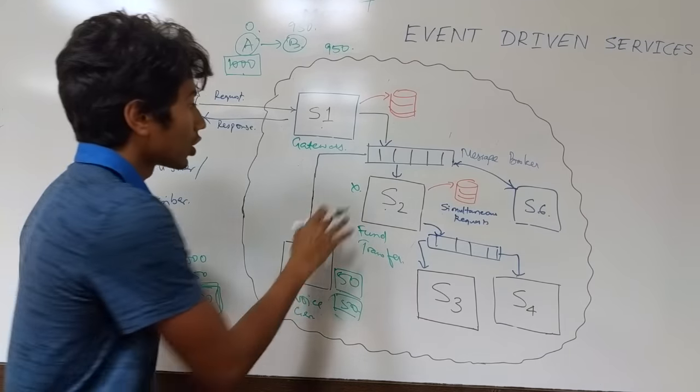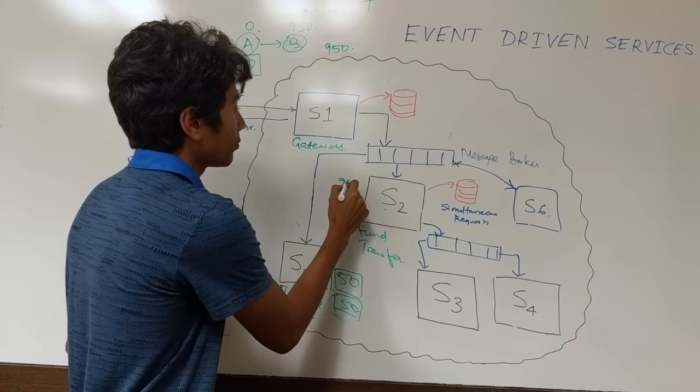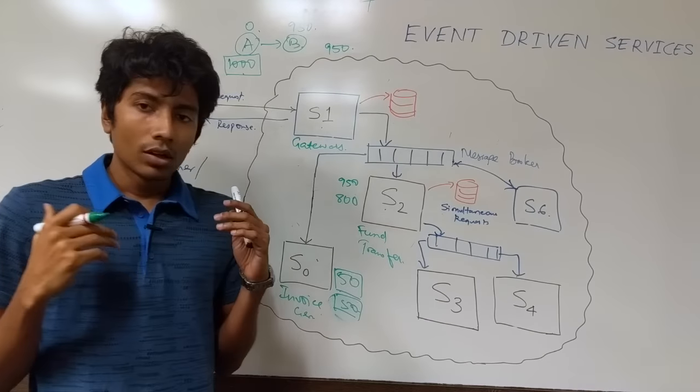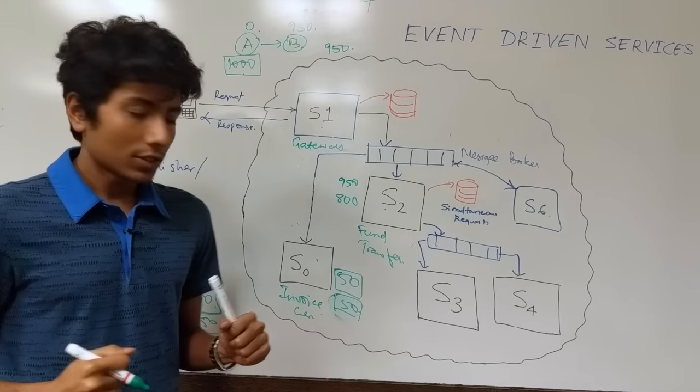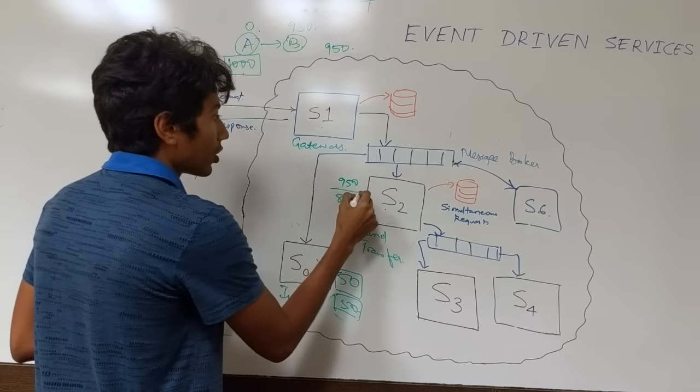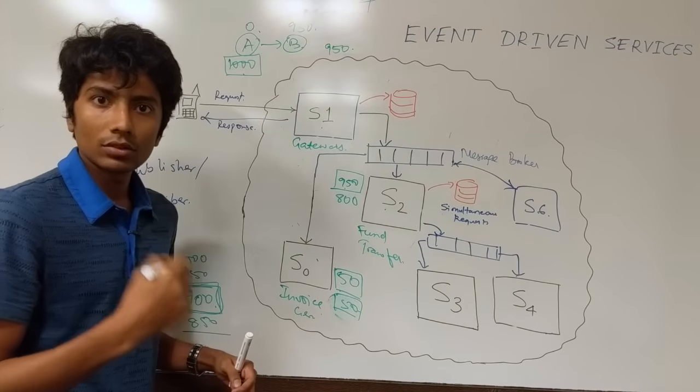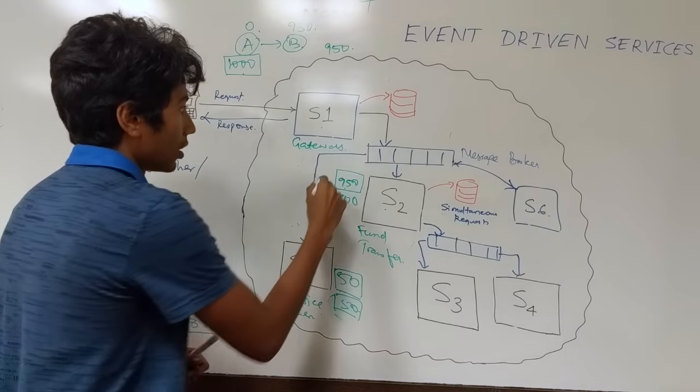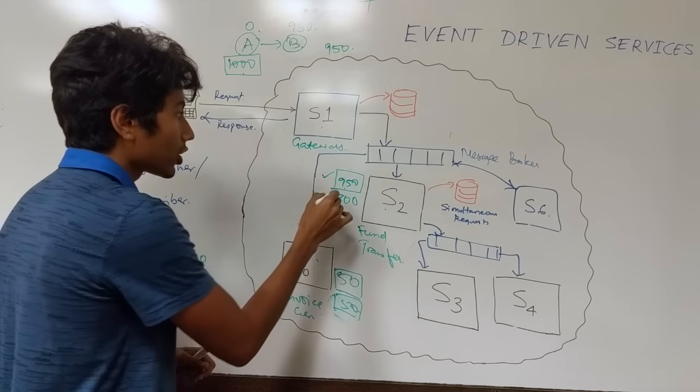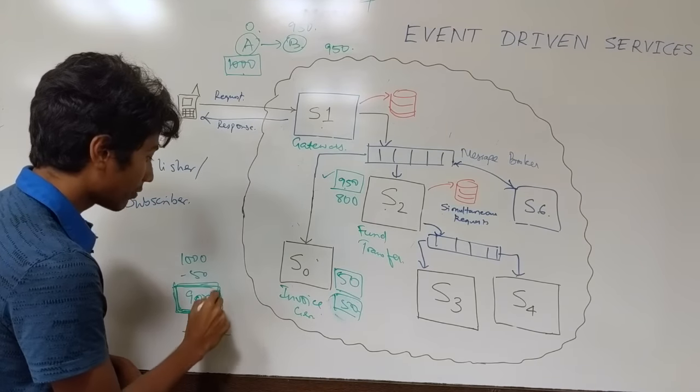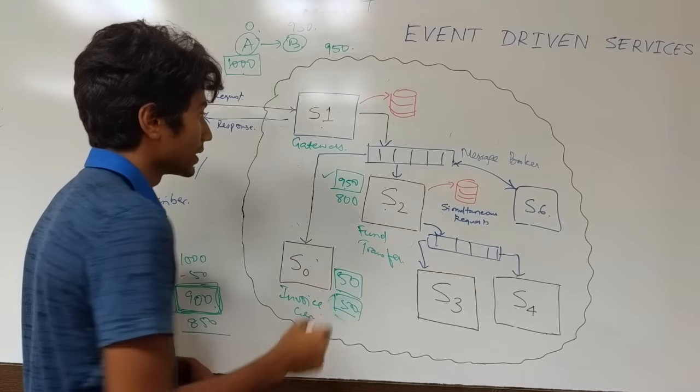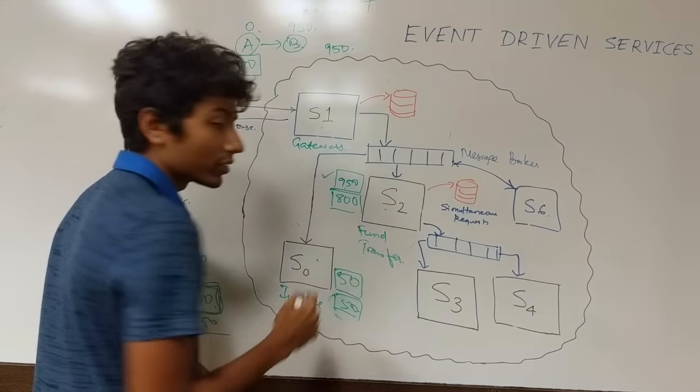And the fund transfer got two requests of 950 and 800. When the fund transfer runs, what's going to happen is that it got a request for 950 transaction. That is going to fail because the current funds you have is 900, 950 is beyond that.